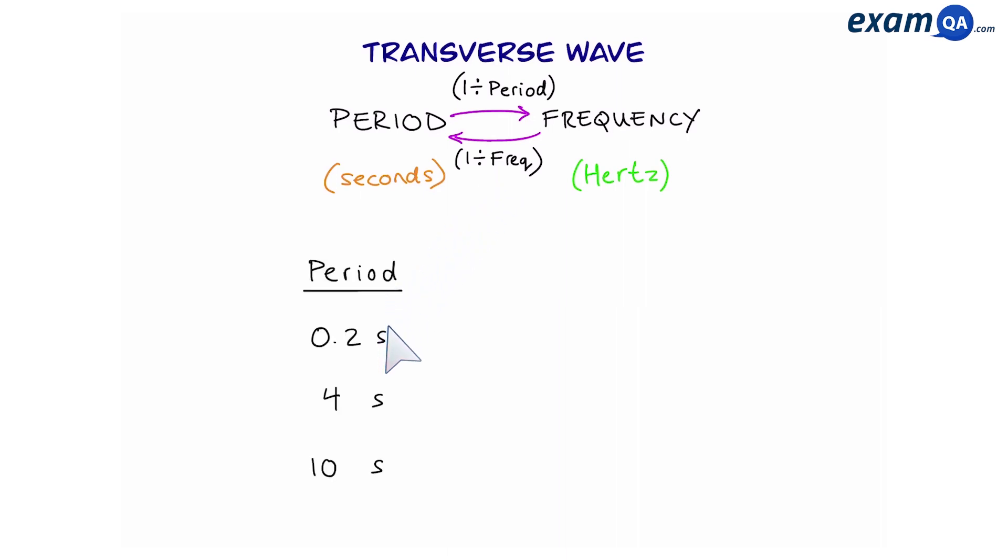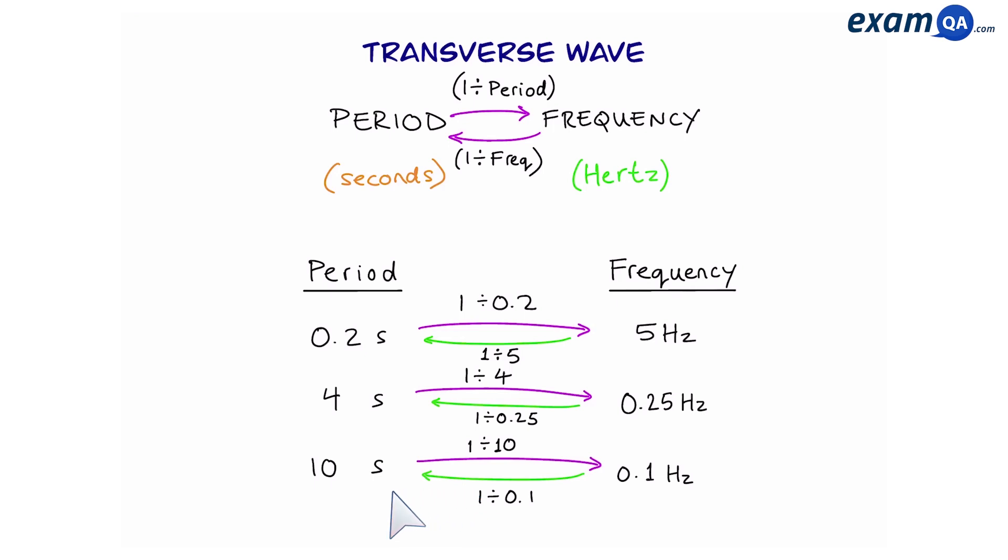So let's say here we have three different periods for three different waves, and we want to work out the frequency of each wave. So let's start with the first one. 1 divided by 0.2, and that gives us 5 hertz which is the frequency. Moving on to the next one, we're going to do 1 divided by 4, and that gives us 0.25 hertz. And finally for the last one, 1 divided by 10 gives us 0.1 hertz. We can also go the other way from frequency back to period. All we have to do is 1 divided by frequency. Let's start with the top one again. 1 divided by 5 gives us 0.2. Perfect. We've got the same number that we started with. Let's go to the next one. 1 divided by 0.25 gives us 4. And the last one, 1 divided by 0.1 gives us 10.